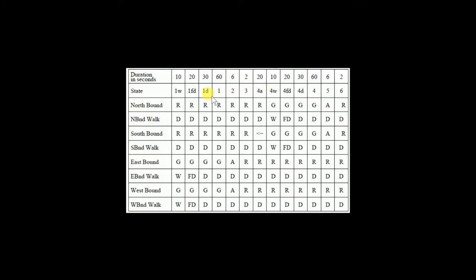One thing to note is these states here only happen if we have a signal. So basically in state 1W, which means it's the walking state for eastbound and westbound pedestrians walking east and west, that only occurs if we have someone at the lights that hits the button. The signal is taken to the system and the system basically prompts it to go into this state. If we don't have a walk state then we're going to start at number one.